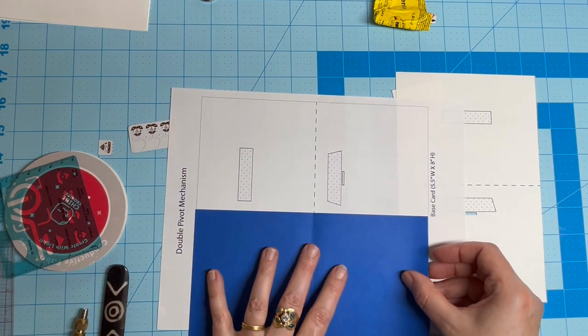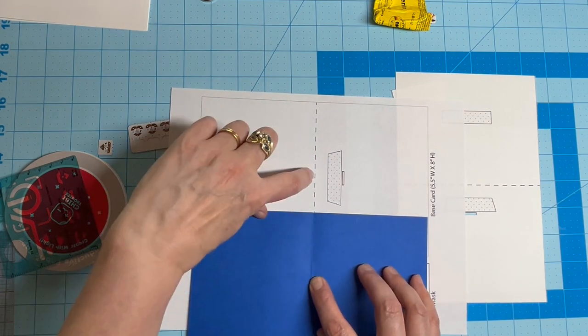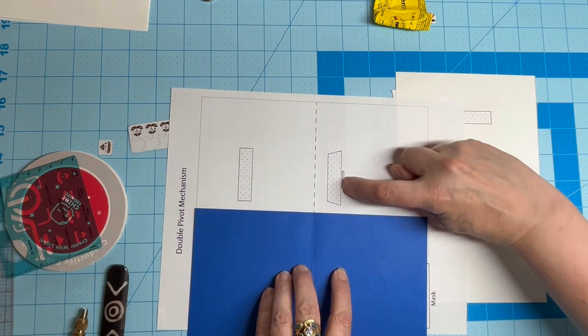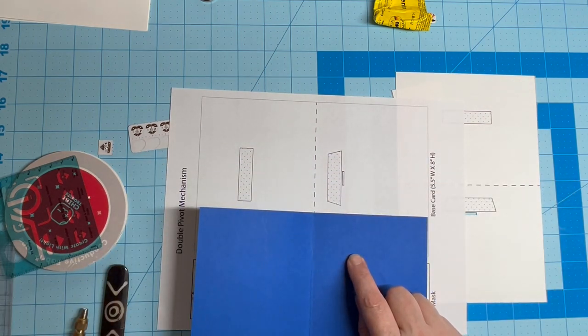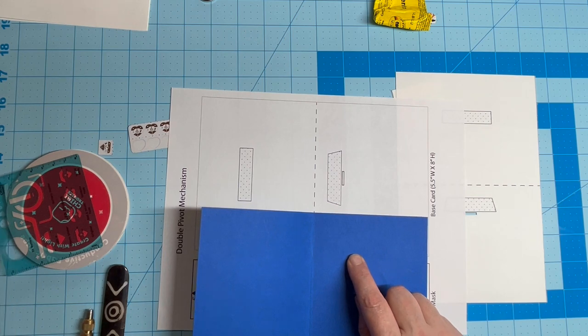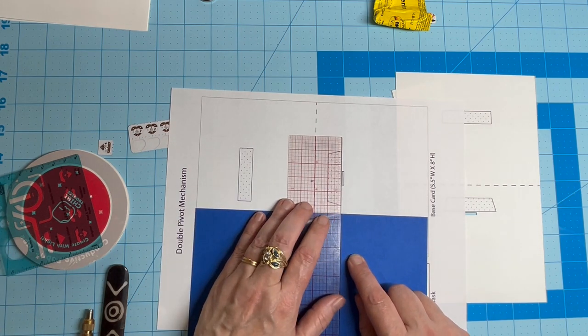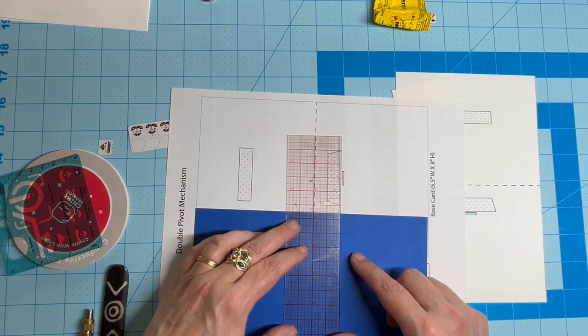If you prefer to work off template, the most important thing to mark on your base card is a line about an inch down from the center crease. Then, you'll need to cut a small slot adjacent to that line. The slot will help you orient everything else.